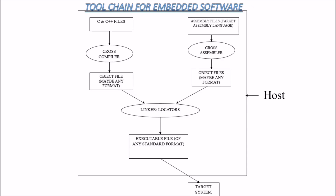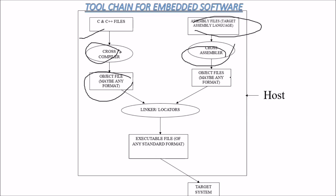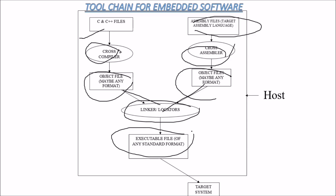This is the toolchain for embedded software. There are C/C++ files that go through a cross-compiler to produce object files. Assembly files in the target assembly language go through a cross-assembler to produce object files as well. Both sets of object files go through linkers and locators to produce an executable file, which is then loaded onto the target system. The host is where the compilation is prepared and the target system is where it runs.